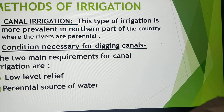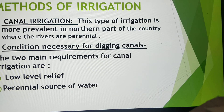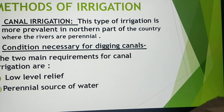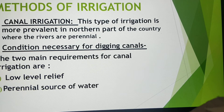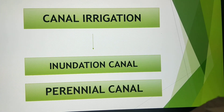Canal irrigation is further subdivided into inundation canals and perennial canals. Canal irrigation is a type of irrigation which is more prevalent in the northern part of the country where the rivers are perennial, meaning the rivers flow throughout the year and don't dry up. The two main requirements for canal irrigation are low-level relief and a perennial source of water — that is, snow-fed rivers which may be used for the development of canal irrigation. The water from these rivers is stored by building a dam or weir across the river.